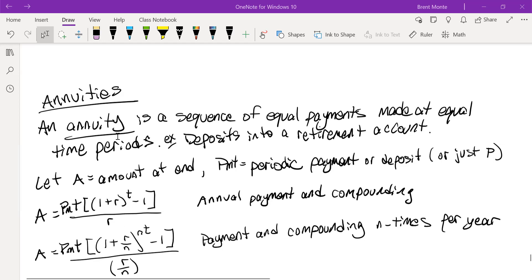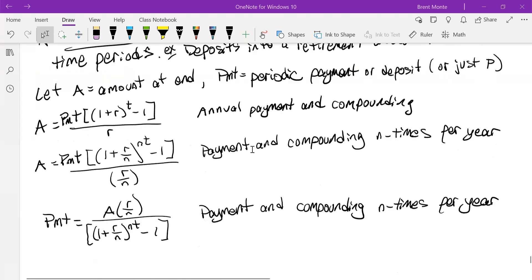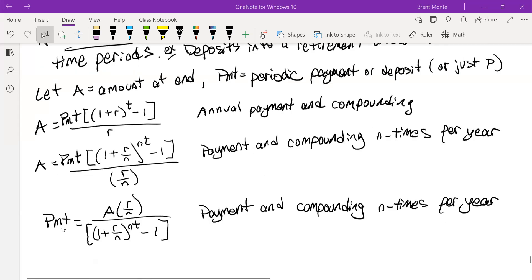Those are the formulas to find the amount at the end. If we're looking specifically for how much the payment needs to be, if we know the amount that we want to have at the end, we've got another formula that I have listed down here. The payment is equal to A times R over N divided by that big thing on the bottom. Again, that one is for payment and compounding N times per year.